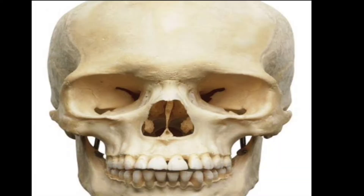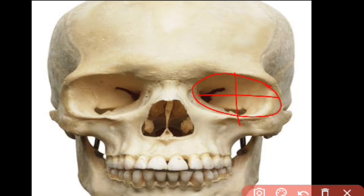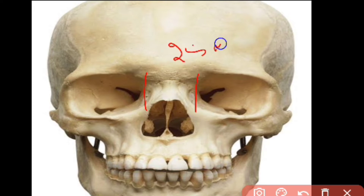Moving on to the dimensions of the orbital cavity: along the medial wall it is around 42 millimeters, and along the lateral wall it is around 50 millimeters. The base of the orbit is horizontally around 40 millimeters and vertically around 35 millimeters. The inter-orbital width — the distance between the two medial walls — is around 25 millimeters, and the extra-orbital width between the two lateral walls is around 100 millimeters.